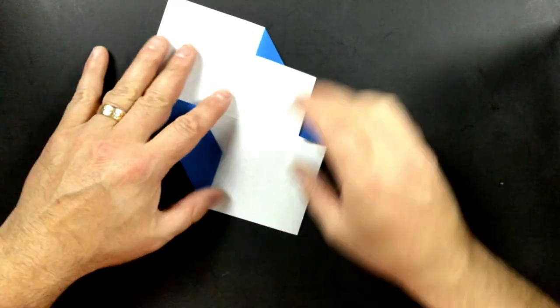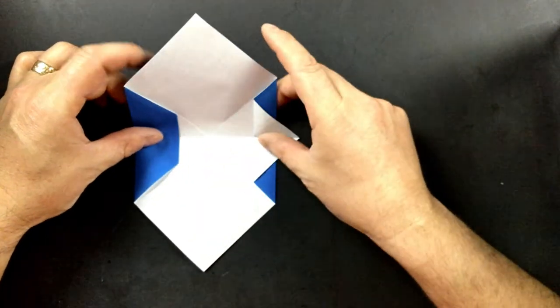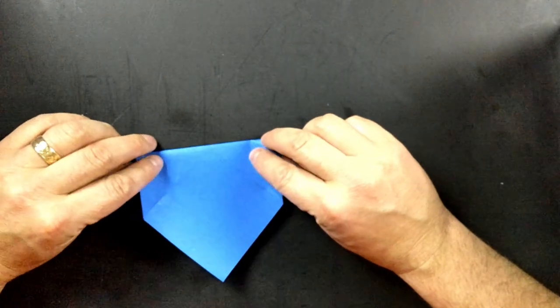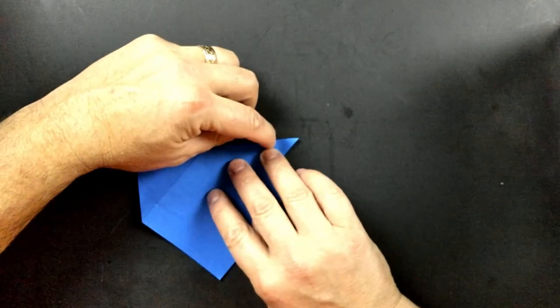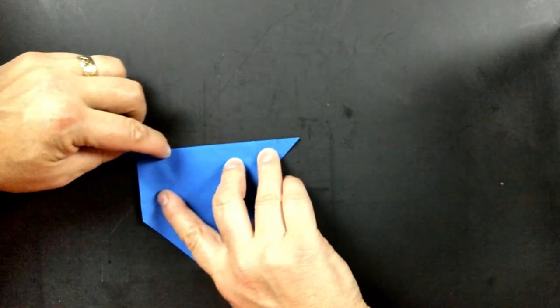Now let me turn it back here. We're going to take the top and fold it down to the bottom. And it should line up. You might go ahead and score that crease again.